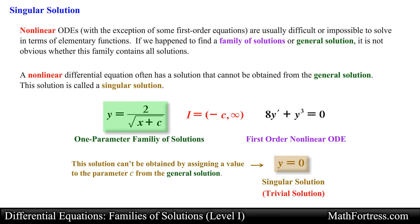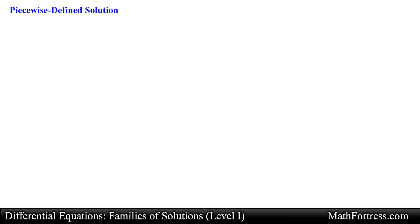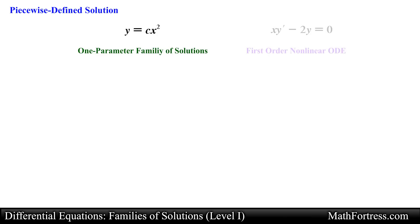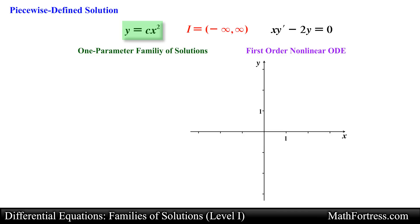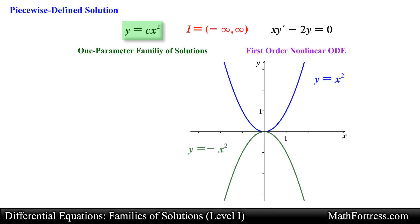Note that the solution y equals 0 is also a trivial solution of the differential equation, but this is not always the case. Lastly, a solution to a differential equation can be a piecewise defined function. For example, the family y equals c times x squared is a general solution of the differential equation x times y prime minus 2y equals 0 on the interval negative infinity to positive infinity. Using the general solution, we can generate two particular solutions: when c equals 1 and when c equals negative 1. The solution curve of each case is represented by the following curves.